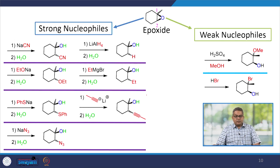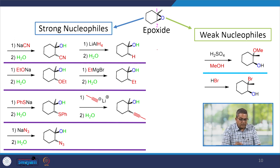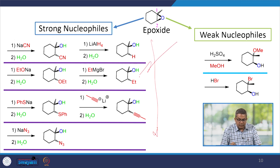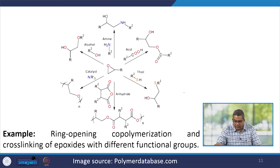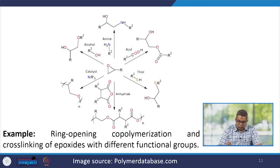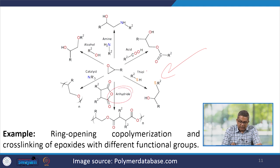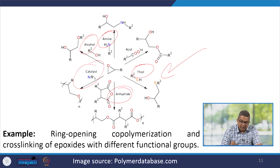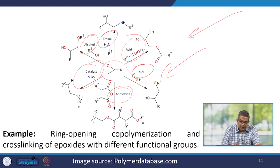There are certain strong nucleophiles such as NaCN and NH₂ that react with epoxides, as well as weak nucleophiles. This is the best example of ring-opening co-polymerization and the cross-linking of epoxides with different functional groups like anhydride, thiols, amines and alcohols with the help of catalysts and acids, giving a broad spectrum of reactions.